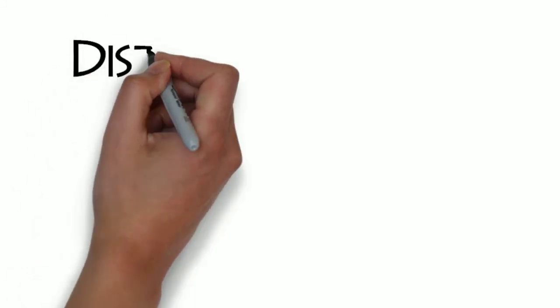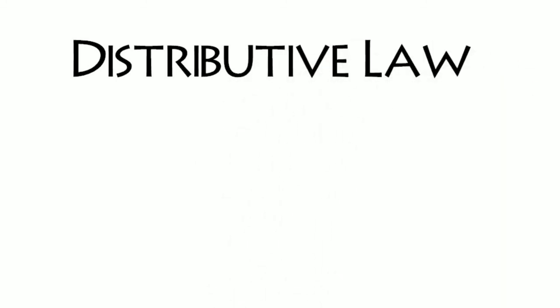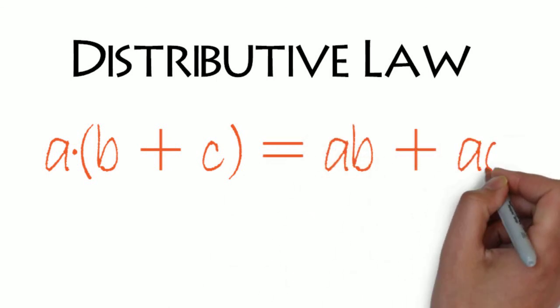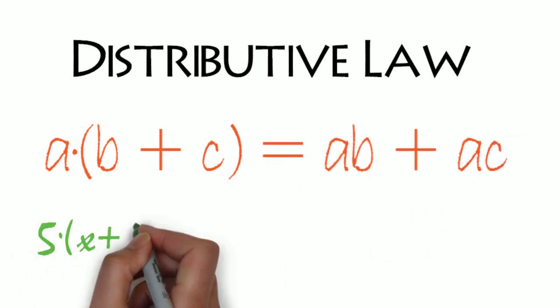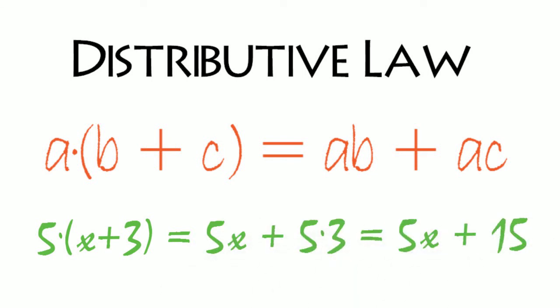Hi, this is Jill Dumasnell discussing the distributive law. The distributive law states that multiplication distributes over addition. For example, 5 times the sum x plus 3 is 5 times x plus 5 times 3.